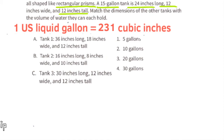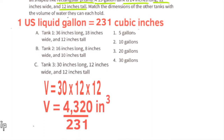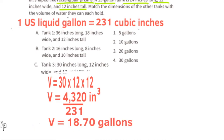Part C. Tank 3: 30 inches long, 12 inches wide, and 12 inches tall. That's 30 times 12 times 12, which equals 4,320 cubic inches. 4,320 divided by 231 is a little more than 18.7 gallons. So I would select number 3, 20 gallons.